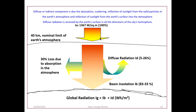1367 W/m² of solar radiation enters Earth's 40 km nominal atmosphere. While reaching the Earth's surface, diffuse radiation constitutes 5 to 26% of the solar constant, and direct solar radiation reaching Earth's surface is 83 to 33% of the solar constant — about 30% loss is due to absorption in the atmosphere. Global radiation is the sum of beam radiation plus diffuse radiation, measured in Wh/m² (cumulative) or W/m² (instantaneous).